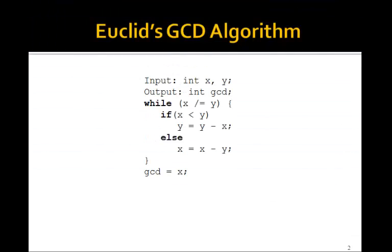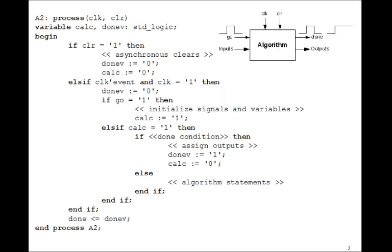Here's the GCD algorithm again. Remember the problem is with the while loop. We saw that we could use this technique of using the rising edge of the clock as sort of simulating the while loop because, remember, on every clock pulse, we execute this over again. Now the trick is we're going to set CALC to 0 to begin with, and then GO goes to 1 for one clock pulse. So if GO equals 1, we'll initialize any signals and variables and then set CALC to 1. Then on the next clock pulse, GO has gone to 0. So we pass the IF and we go to the ELSE IF.